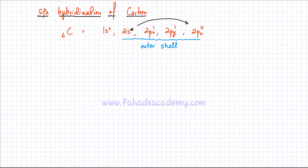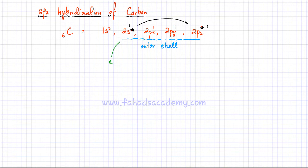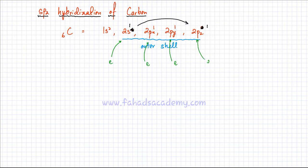So instead of having 2 electrons in the 2s orbital, it will have just 1 electron, and it would promote 1 of its electrons into the 2pz orbital. Now carbon's electronic configuration becomes: the 2s has 1 electron, the 2px has 1 electron, the 2py has 1 electron, and the 2pz has 1 electron. So carbon now has 4 outer orbitals that need electrons. Carbon is going to try and grab an electron from another atom into the 2s orbital, one into the 2px, one into the 2py, and one into the 2pz — making it capable of forming 4 bonds, with 4 outer orbitals that need electrons to complete the outer shell.